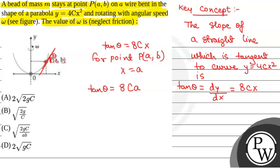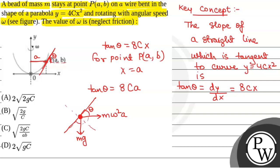Now we will see the free body diagram of the bead. The centrifugal force will act radially outward, that is MΩ²R, where R = A. So the centrifugal force is MΩ²A. The weight of the bead is Mg. This angle is θ, so this will be 90 minus θ, and again this will be θ, and this will be 90 minus θ.